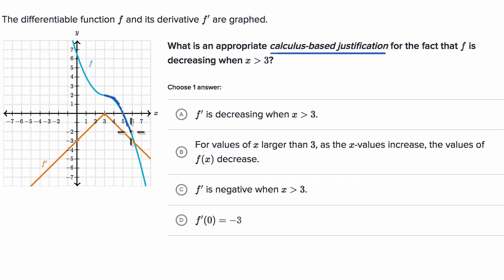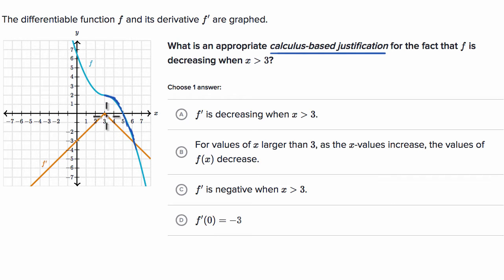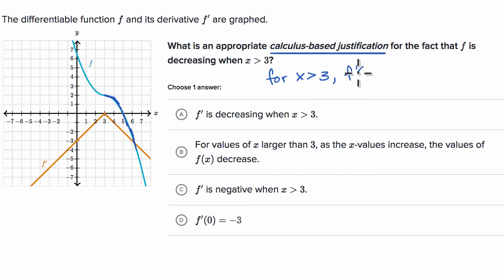As x increases, the y value — the value of our function — decreases. So a calculus-based justification: I could look at the derivative. We're going to be decreasing if the slope of the tangent line is negative, which means the derivative is negative. We can see that for x greater than three, the derivative is less than zero. So my justification: for x greater than three, f prime of x is less than zero.